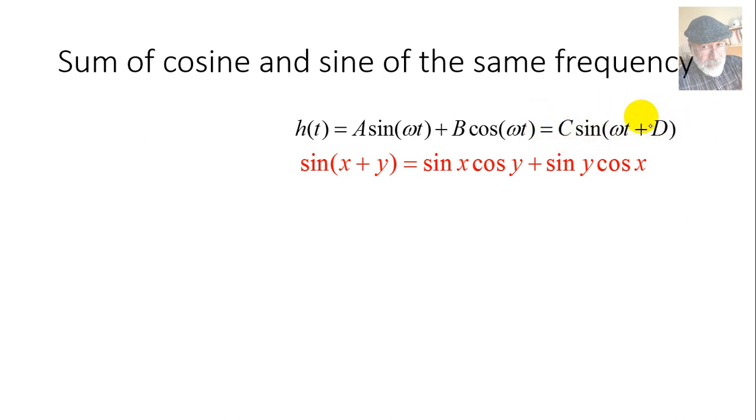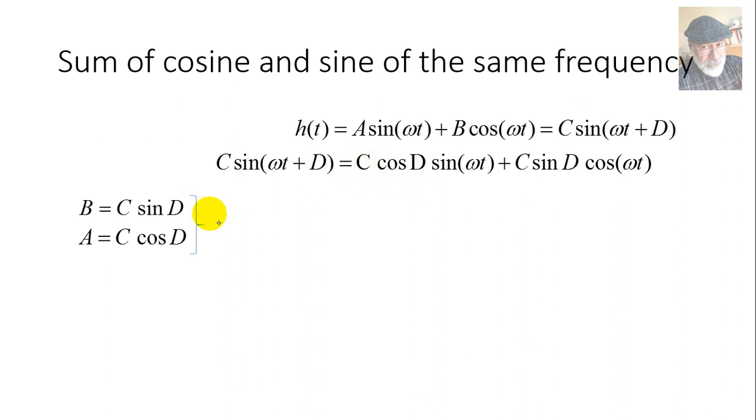Sine of X plus Y is sine of X cosine Y plus sine Y cosine X. Let's apply that to this right-hand side of that expression. Let's write it over. The C sine ωT plus D is C cosine D sine ωT plus C sine D cosine ωT. You say, okay, what are you going to do? What I'm going to do is observe that the coefficient in this expression for sine ωT has to be the same coefficient for sine ωT in this other expression. So, A has to be equal to C cosine D and B has to be equal to C sine D. Those are two equations. B is equal to C sine D and A is equal to C cosine D.